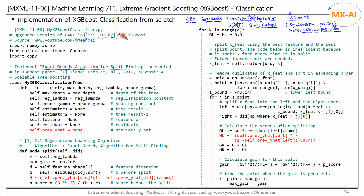Here we will only discuss the changes in XGBoost. First, create a MyXGClassificationTree class to use as the base learner for XGBoost. Set the tree's depth, regularization constant, and pruning constant. We use feature data and residuals as the training data, and use the y-hat value from the previous iteration round. In the first round, this is an initial prediction.